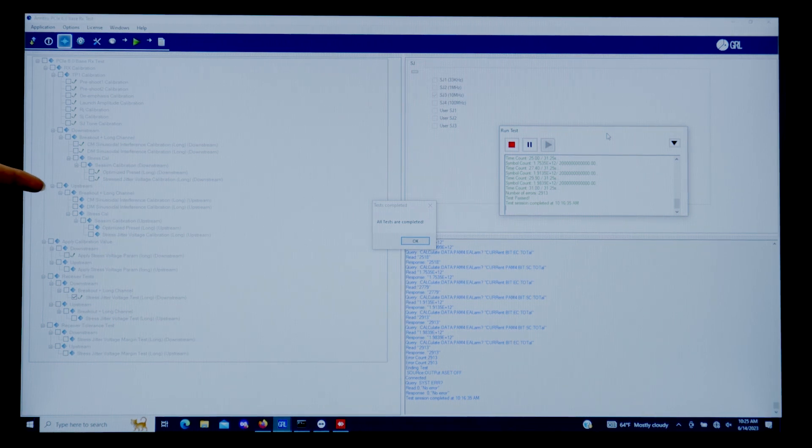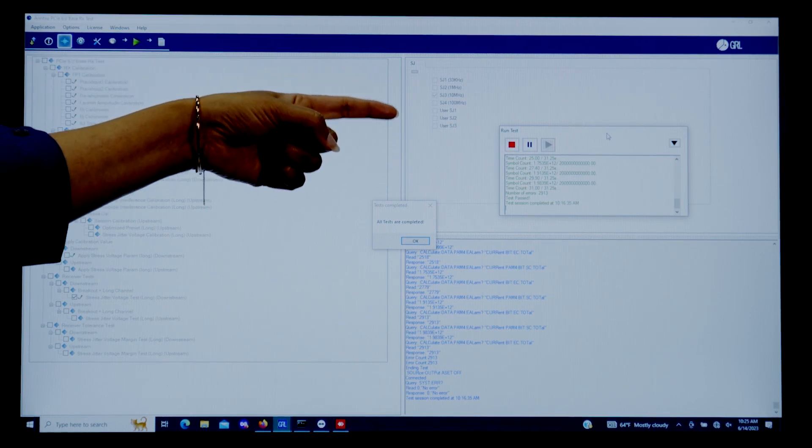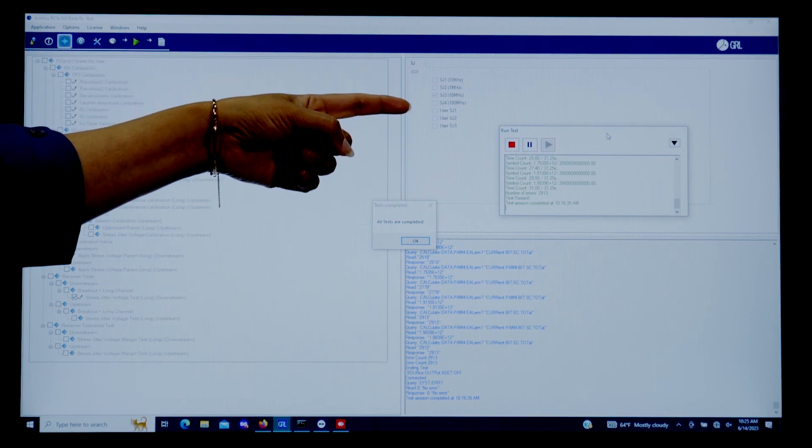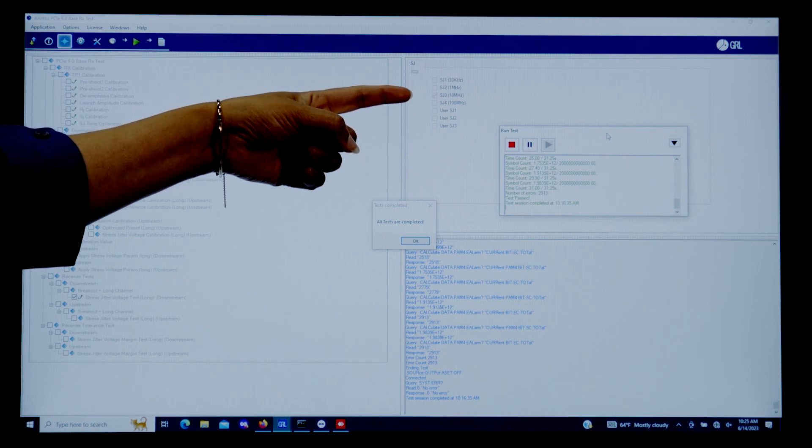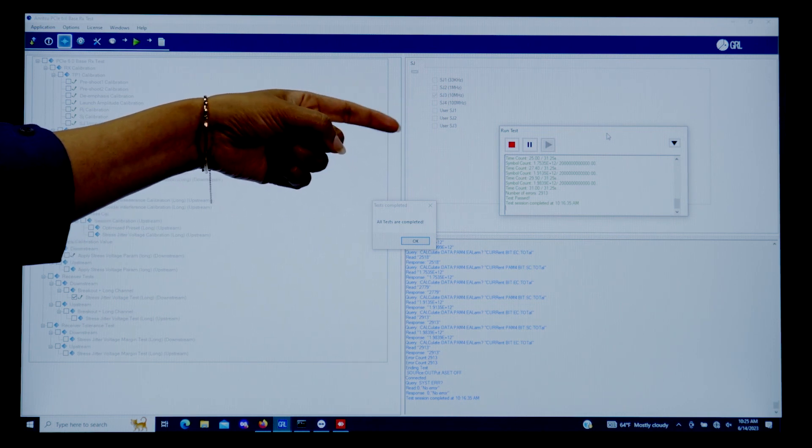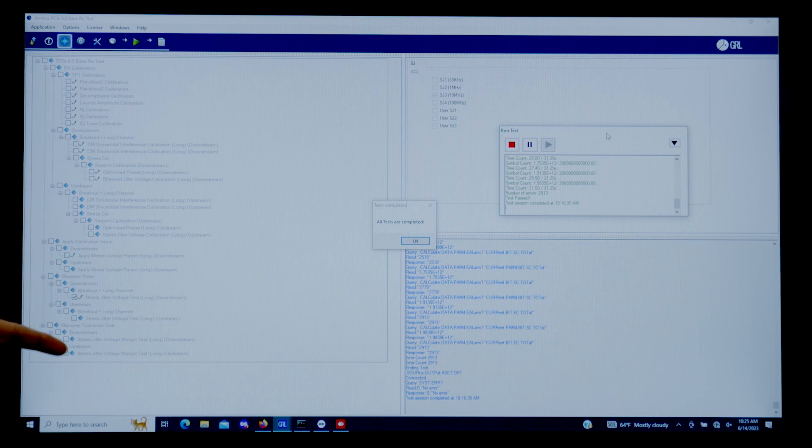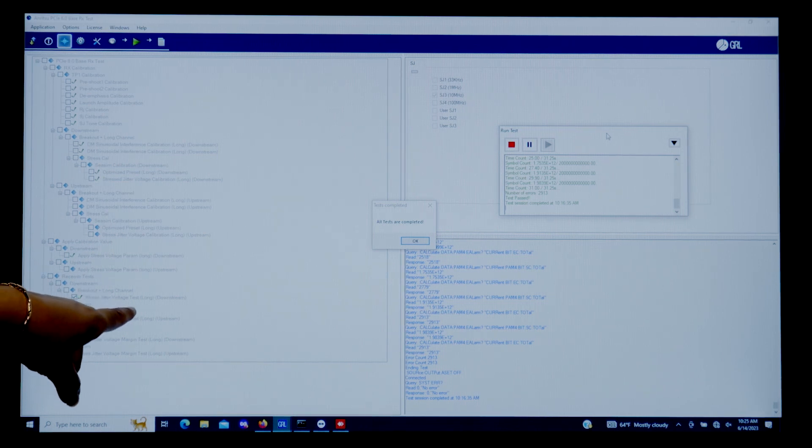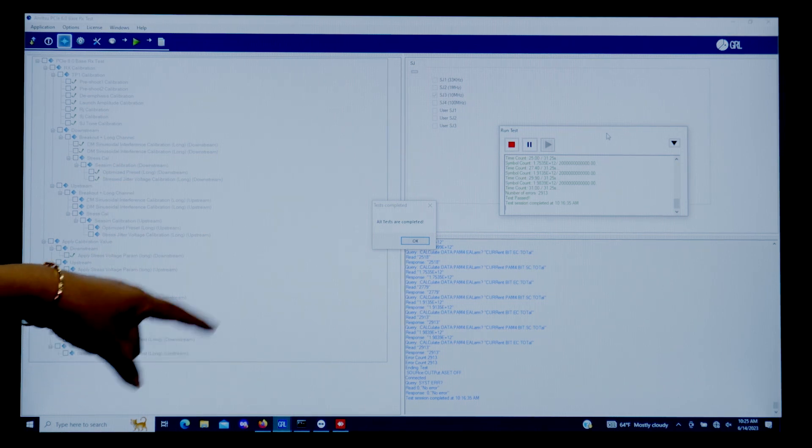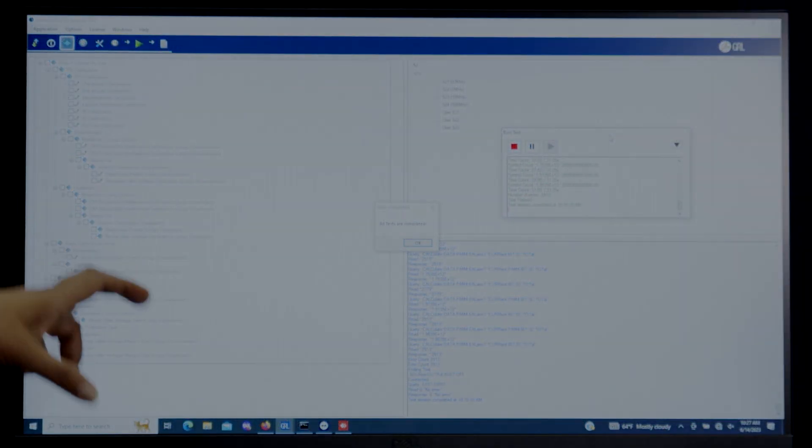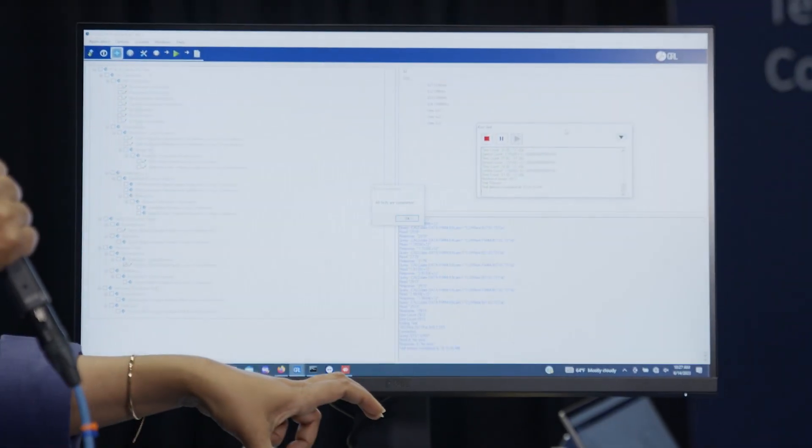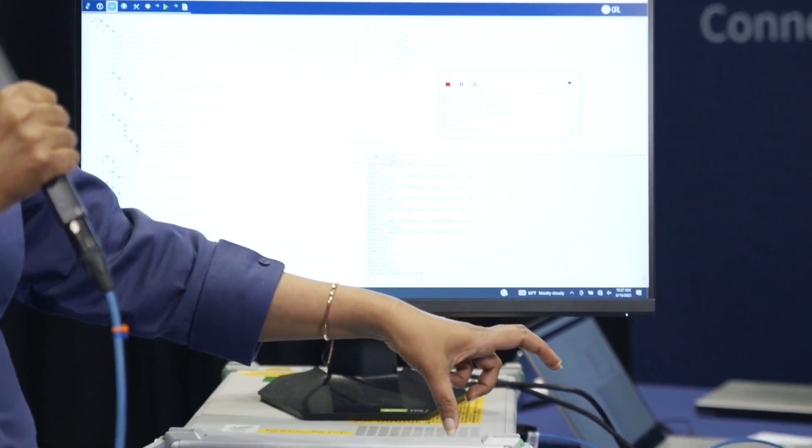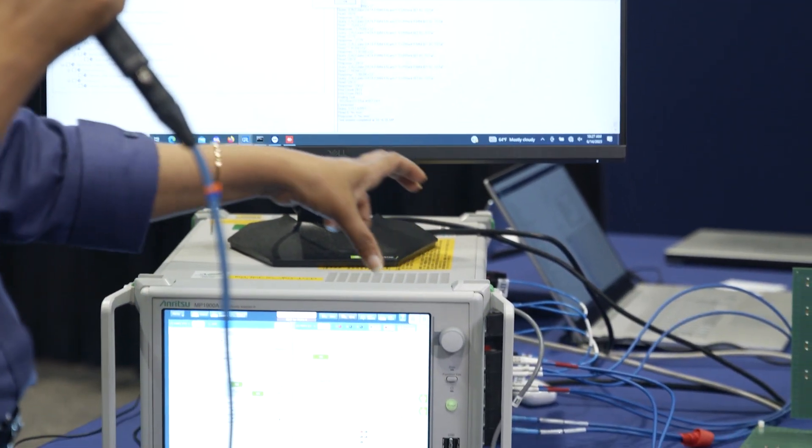Across all the jitter specs here from 33 kilohertz, 1 megahertz, 10 megahertz, 200 megahertz. As you can see, this is the stress jitter voltage test with the long channel and all tests have been completed. The BERT is sending the PRBS pattern through the ISI channel. The total loss in the ISI channel is 32 dB and it's going to the PHY Gen 6 silicon proven evaluation board.